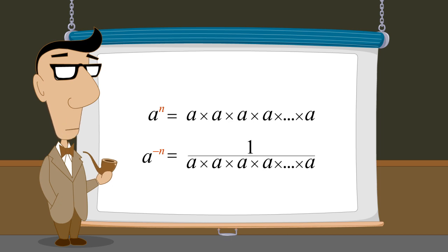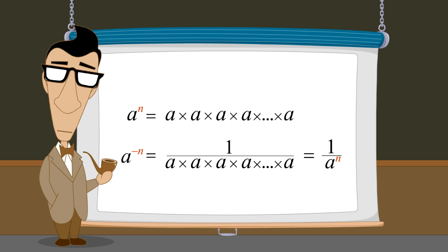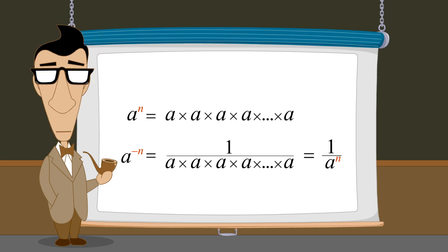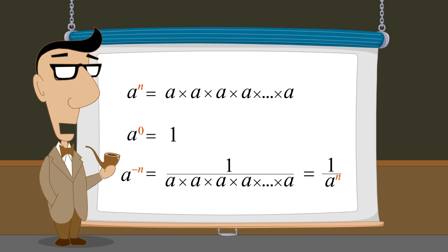So a number with a negative exponent is the same as one over that number with the same positive exponent. We also saw that a raised to the zero power is equal to one — unless a itself is zero, since zero to the zero power is undefined.